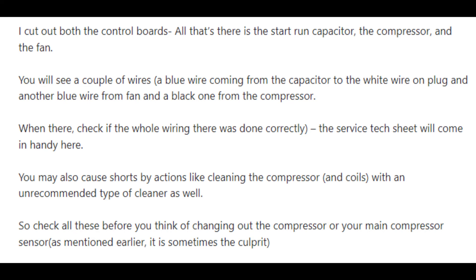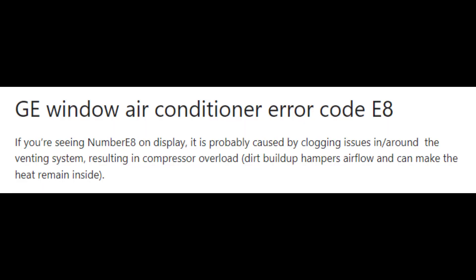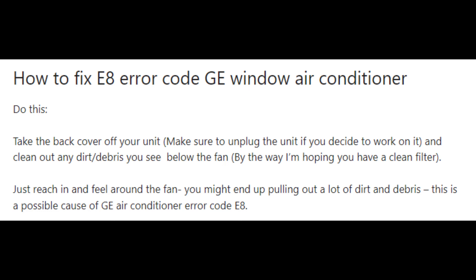Error code E8 is another relatively simple one — it usually indicates clogging issues, meaning there are clogs blocking the venting system. If the vents are clogged, you are likely to see error code E8 on the display. When the vents are clogged, the compressor becomes overloaded because airflow is hampered, causing heat to build up inside. To get rid of error code E8, clean the area in and around the vent to ensure the venting system is clear.